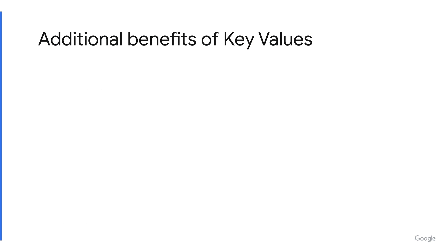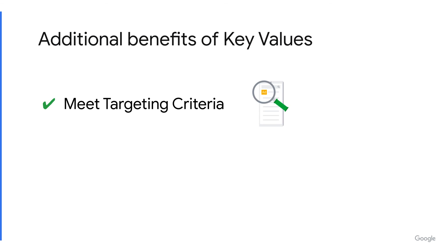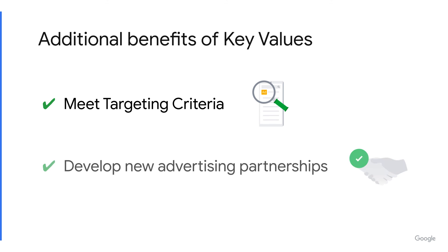Using key values can help you not only meet the targeting criteria of your advertising buyers, but also help you develop new advertising partnerships. When you have key value data collected, you'll be able to run reports and forecast on key value data to tell buyers how much traffic you expect to see in the coming months based on their targeting criteria.